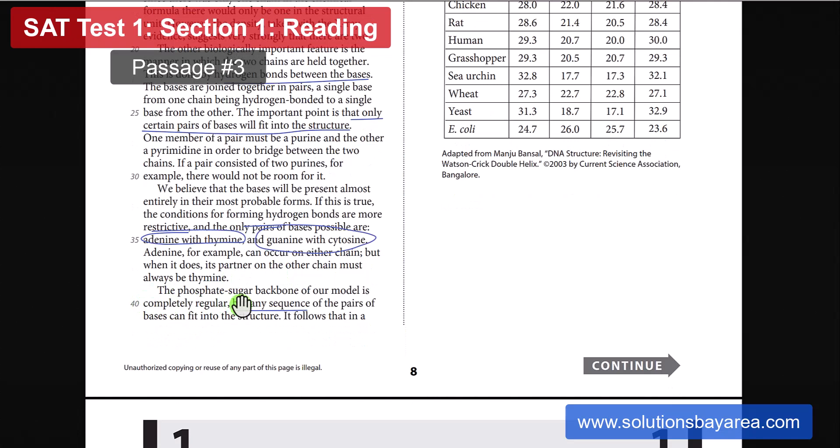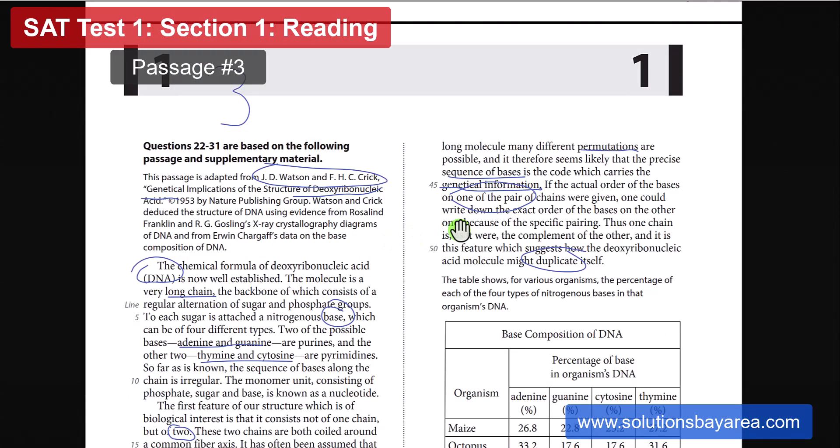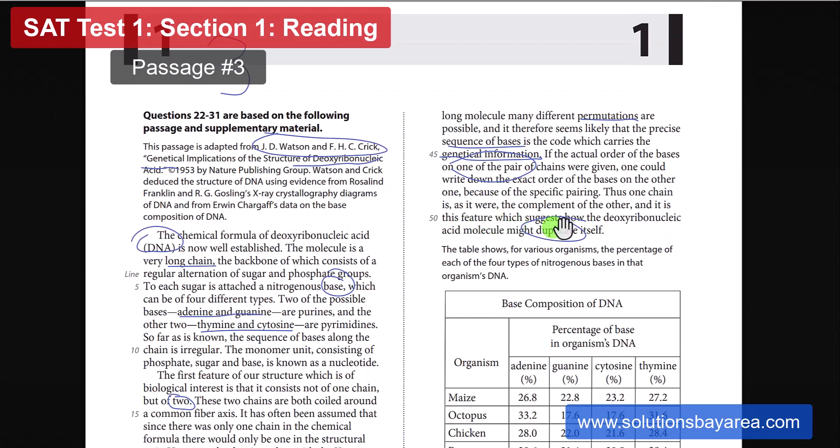Line 40 talks about how any sequence of the pairs of bases can fit into the structure. So even though the pairing is very specific, the sequence of the bases can be different. And it really depends on the sequence. And this is what on line 45 is going to determine the genetic information. Line 46 tells us that if you know the sequence of bases on one side of the chain, you would be able to use that and based on the pairing, figure out what the sequence is on the other side of the chain. Line 50 and 51 kind of talks about how this is how DNA probably duplicates itself.